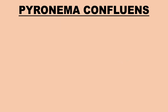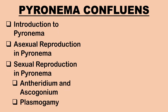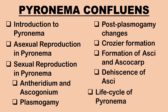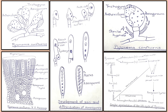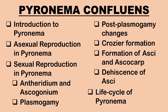Hello, in today's video we shall learn in detail about the fungus Pyronema confluens. By the end of this video, you'll have a clear understanding about genus Pyronema, its different modes of reproduction involving plasmogamy, dikaryon formation, crozier formation, karyogamy, meiosis, ascospore formation, and also its life cycle. Let us begin with the introduction to Pyronema.